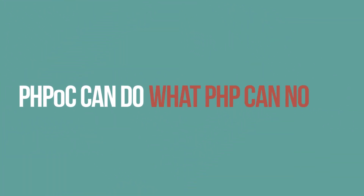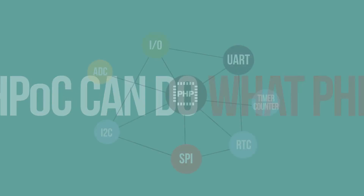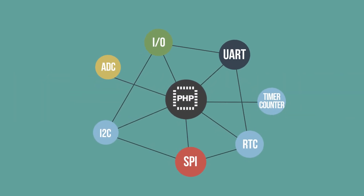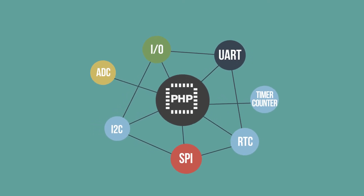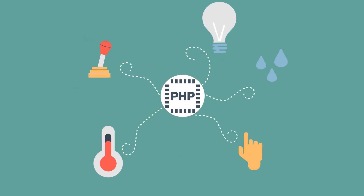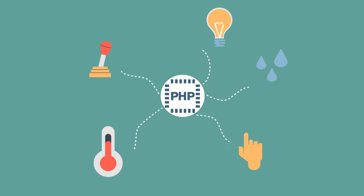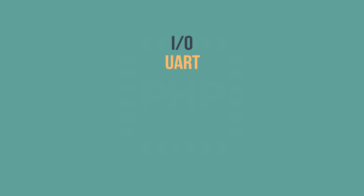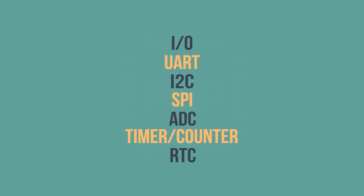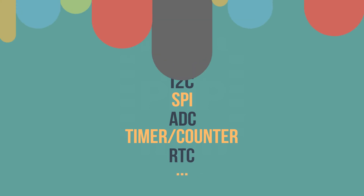So what makes PHPoc different from PHP? Unlike PHP, PHPoc supports unique features which allow users to monitor and control their sensors and devices via various interfaces such as IO, UART, I2C, SPI, ADC, timer counter, RTC, and so on.